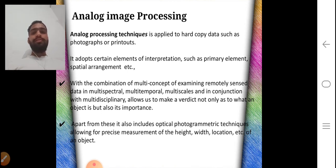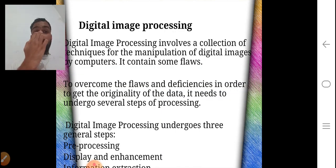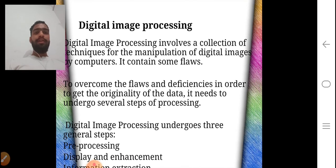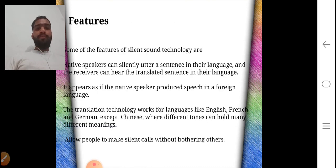It adopts certain elements of interpretation such as primary elements, spatial arrangement, etc. But in digital image processing, it involves a collection of techniques for manipulation of digital images by computers. It contains some flaws. These flaws can be removed by three steps: pre-processing, display and enhancement, and information extraction. From these three steps we can eliminate these flaws.